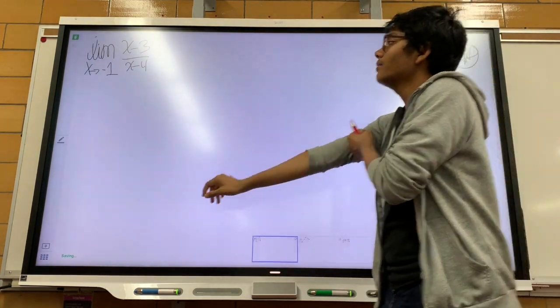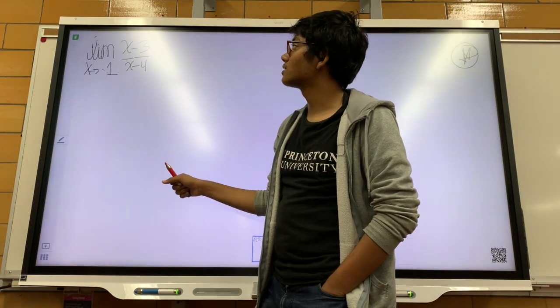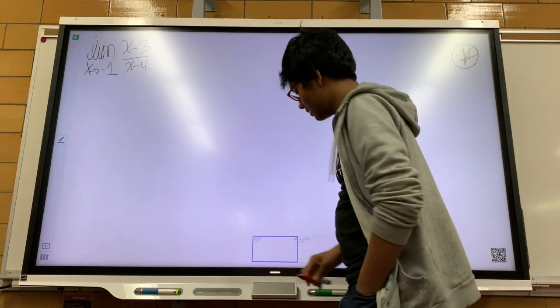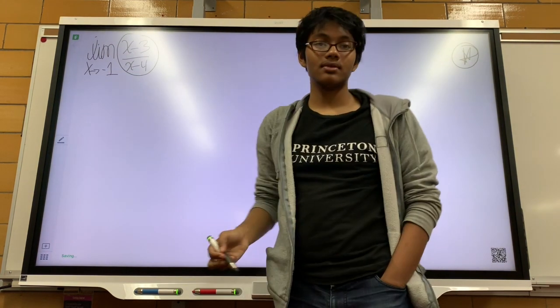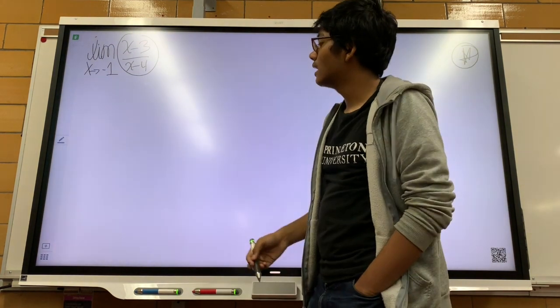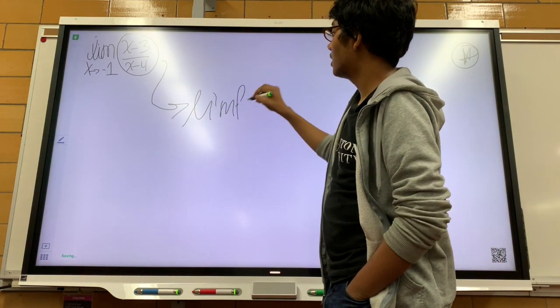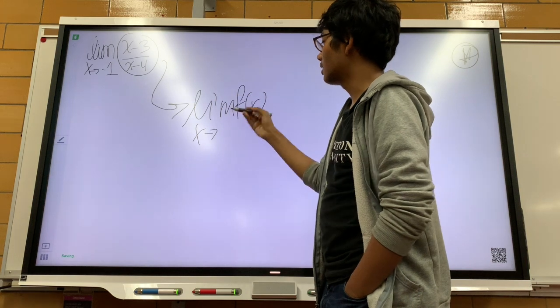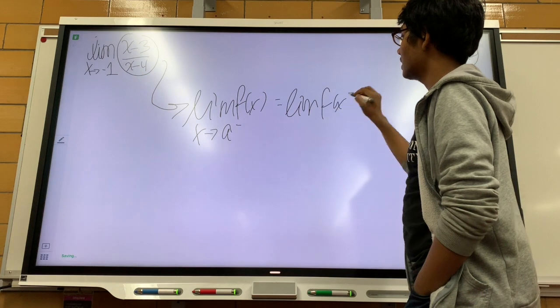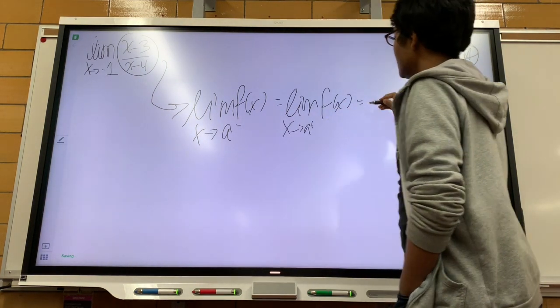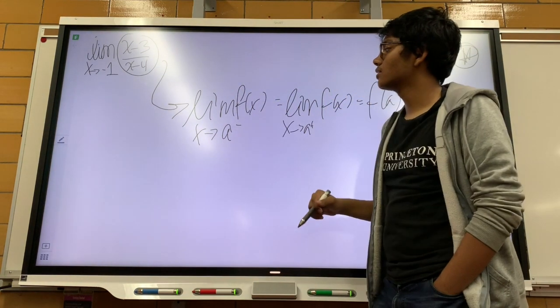So this is our first example: the limit of x minus 3 over x minus 4 as x approaches negative 1. This is a fairly simple limit if you recognize the fact that this function is continuous at x equals negative 1. How do we know it's continuous? Well, the definition of continuity is that the limit of f of x as x approaches a on the left hand side is equal to the limit of f of x as x approaches a from the right hand side, is equal to f of a.